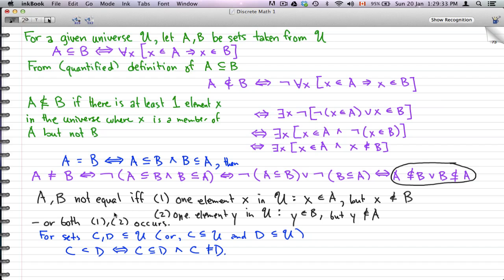So for sets C, D belonging to U, or C is a subset of U and D is a subset of U, C is a proper subset of D, and that is logically equivalent only when C is a subset of D and C is not equal to D.